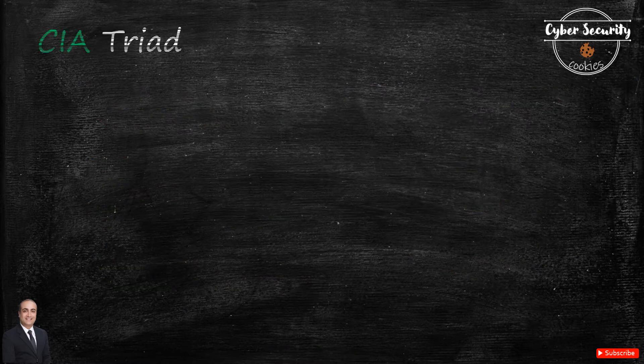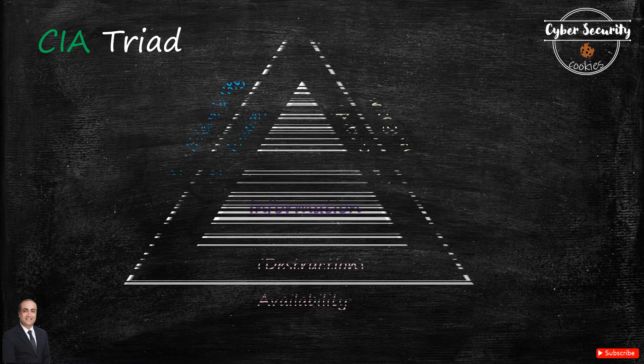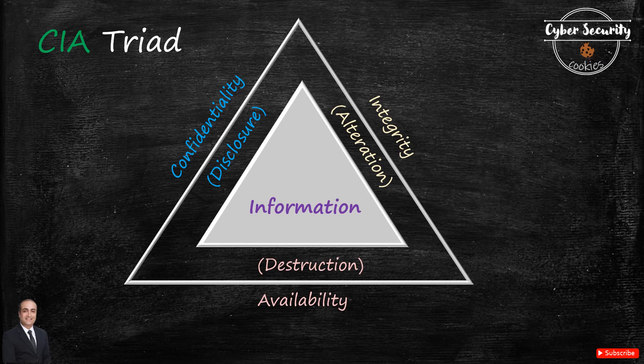I've put the CIA triad as three sides of a triangle for easy understanding. This also means they are interlinked and required to achieve an information security foundation. An effective information system will satisfy all three components — confidentiality, integrity, and availability — and a system lacking any one of these is insufficient. The opposite of CIA is called DAD, which stands for Disclosure, Alteration, and Destruction.